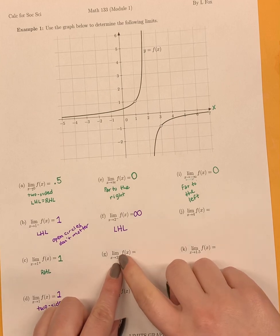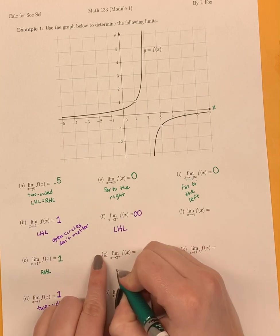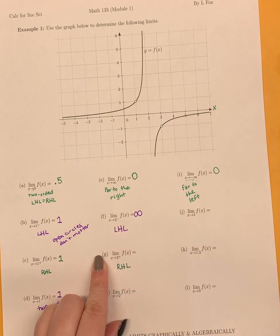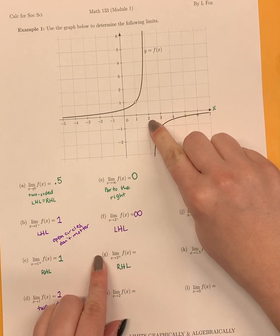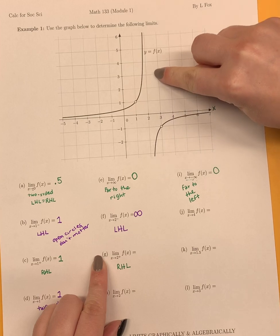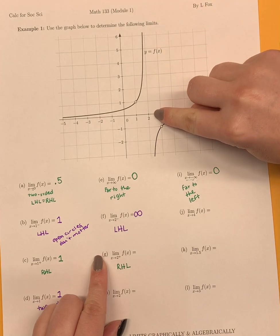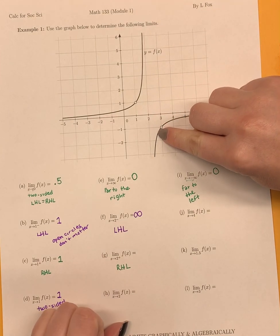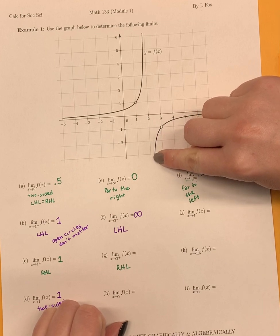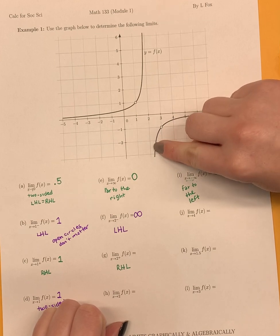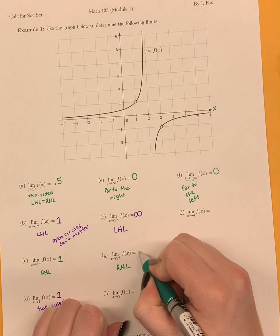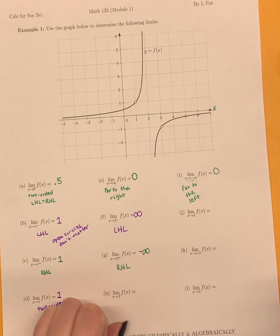Switching gears, we have 2 from the positive side — a right-hand limit. We're going to go toward 2 but hop on to the right, maybe starting at 2.5. There's no graph up here to the right, but it is down here. I hop on the one and only place where the graph is and follow it down. It looks like it's going down without bound, so I'm going to say it's going to negative infinity.